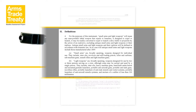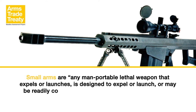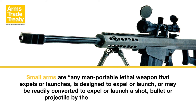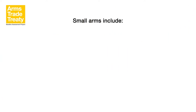The ITI defines small arms and light weapons as: any man-portable lethal weapon that expels or launches, is designed to expel or launch, or may be readily converted to expel or launch a shot, bullet or projectile by the action of an explosive, excluding antique small arms and light weapons or their replicas. Antique small arms and light weapons and their replicas will be defined in accordance with domestic law. In no case will antique small arms and light weapons include those manufactured after 1899.